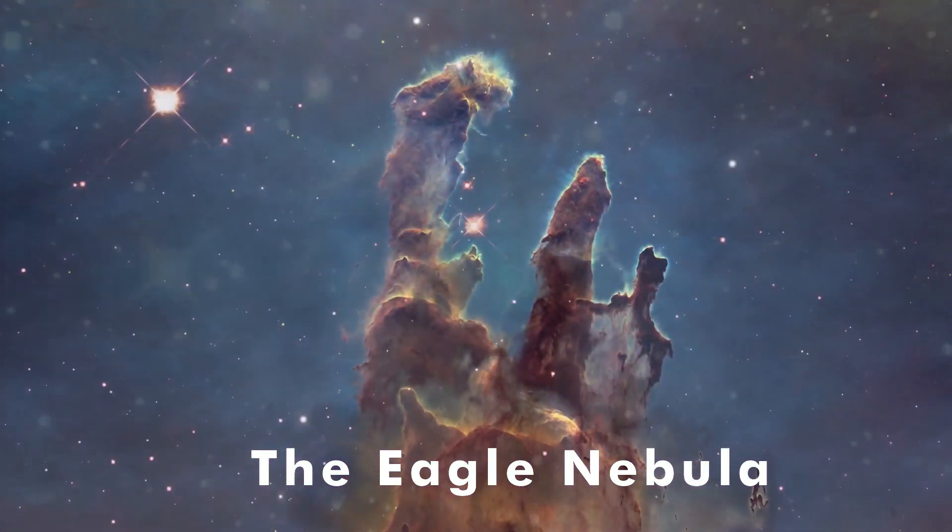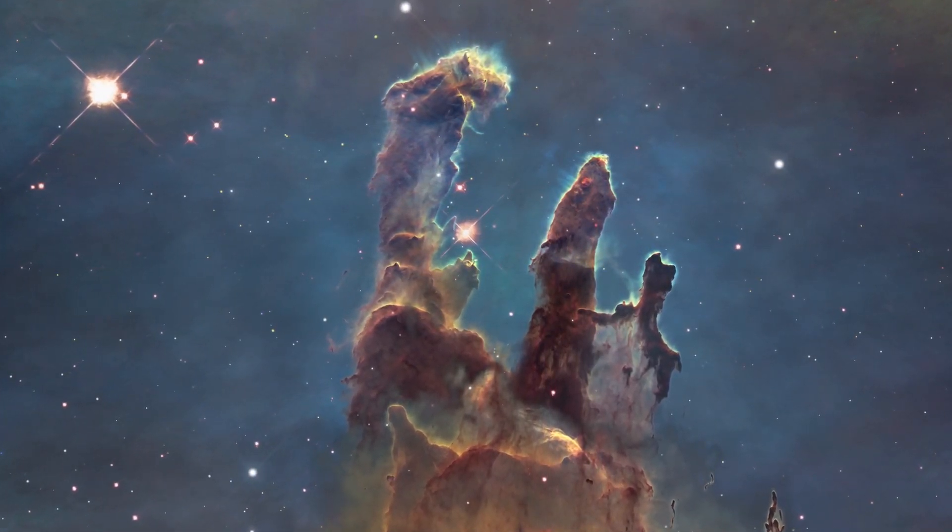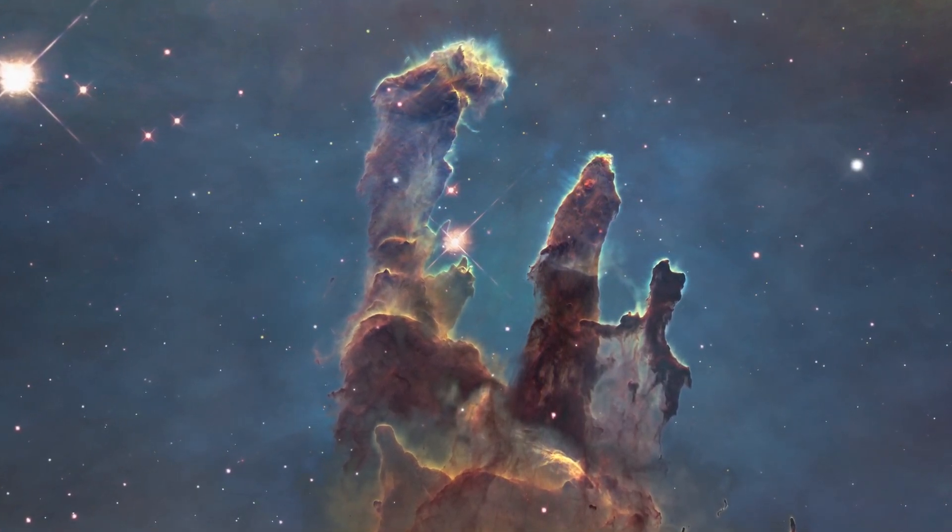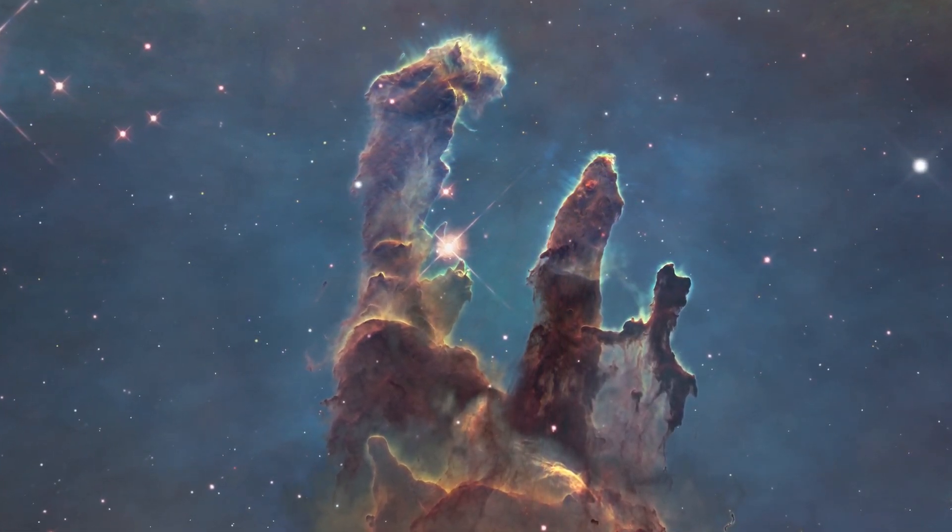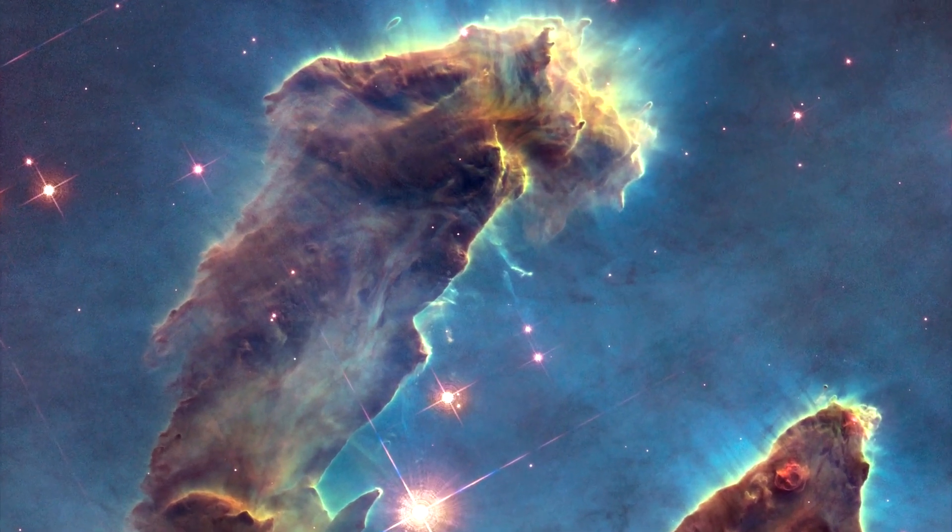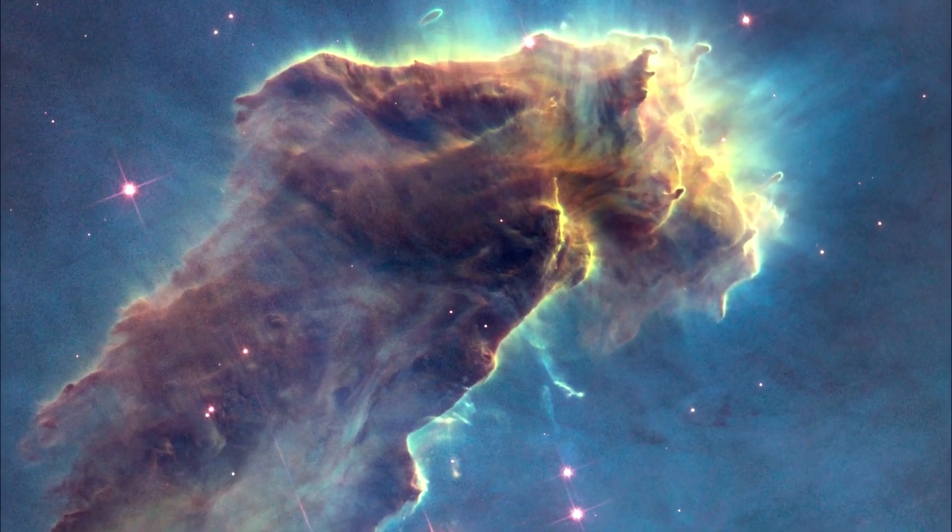The Eagle Nebula, also known as Messier 16 or M16, is one of the most amazing sights that can be seen in a large telescope. In 1995, the world was amazed by the Hubble Space Telescope's beautiful images of the Eagle Nebula. It's the location of several famous structures in our galaxy, including the stunning pillars of creation, an active star-forming region of gas and dust.